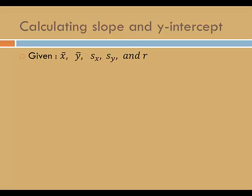If you're given x-bar, y-bar, s sub x, s sub y, and r, the calculations for slope and y-intercept aren't too bad. x-bar is the mean of your explanatory data values, y-bar is the mean of your response data values, s sub x is the standard deviation among the explanatory values, s sub y is the standard deviation among the response values, and r is the correlation coefficient.